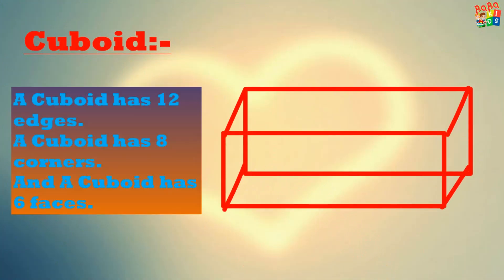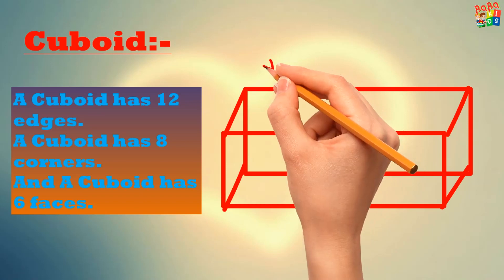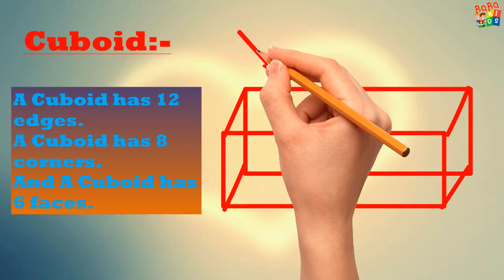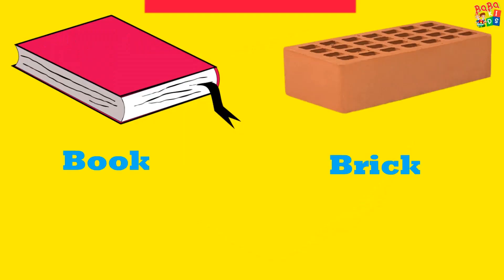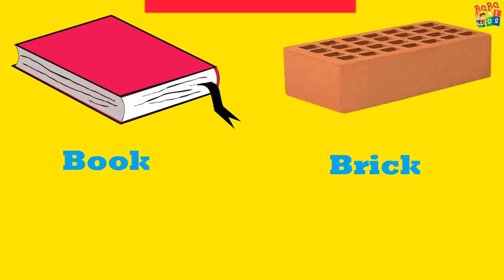Next shape is cuboid. A cuboid has 12 edges, 8 corners, and 6 faces. This shape is cuboid. This book and this brick are cuboid shapes.